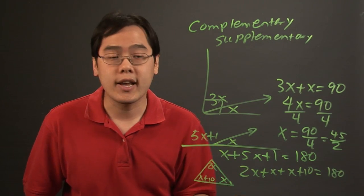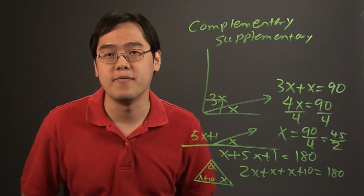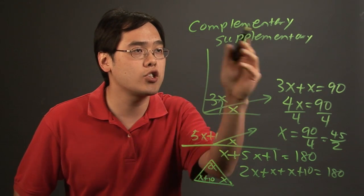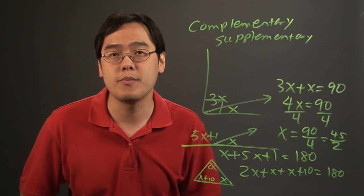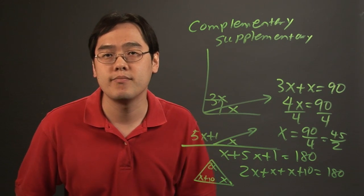And once you solve for x, just plug in the number in place of x and then you'll find the measures of the triangle. So those are just a few illustrations in terms of how angle geometry is used in algebra. So I'm Jimmy Chang and that's how to solve angle geometry with algebra.